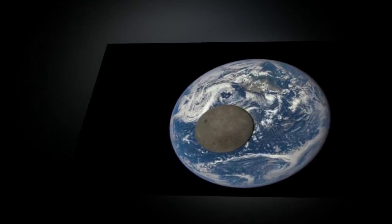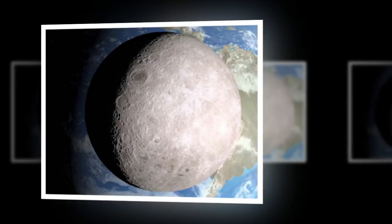EPIC's natural color images of Earth are generated by combining three separate monochrome exposures taken by the camera in quick succession.